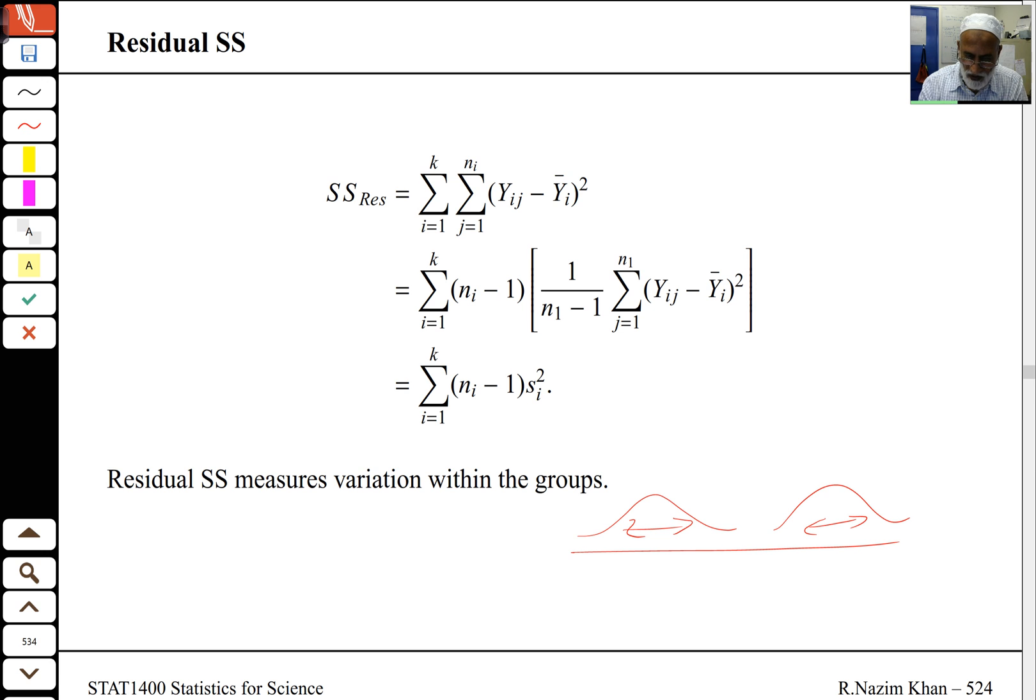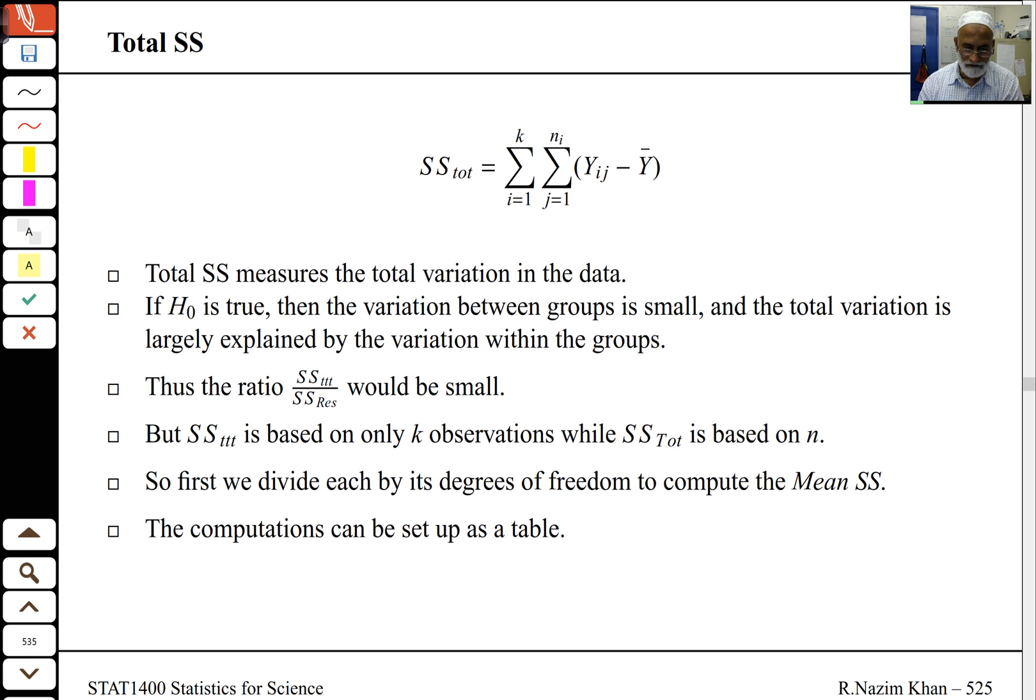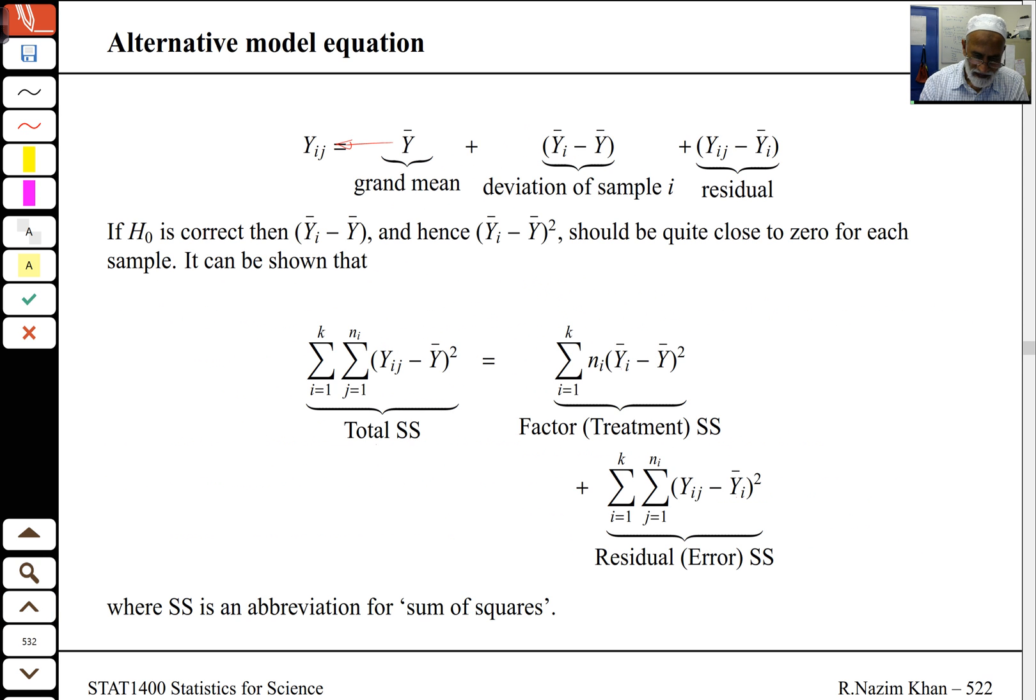The treatment sum of squares measures the variation between the groups. It tells you how different each group is from the grand mean. If H0 is true, they should all be very small. The residual sum of squares essentially measures the variation within the groups. I'm taking a look at several populations that could have different means and looking at the variation there and adding them all up. If I divide by ni minus 1, this becomes a variance of that group. This is the total variation for each of these groups added up. If H0 is true, then the variation between groups is small, and the total variation is mainly by the variation within groups.